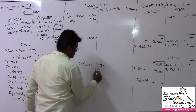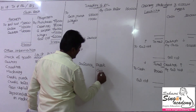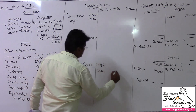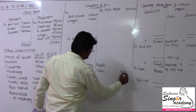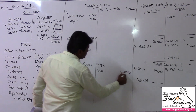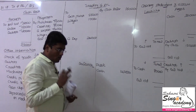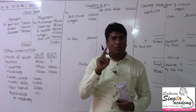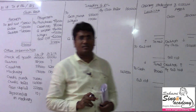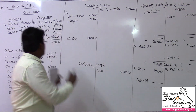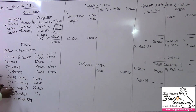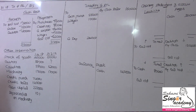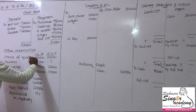The cash account closing balance is 1 lakh 42,000 rupees. This should be posted once in account format. Now there are adjustments — rent outstanding will be posted later. Stock of goods and other items need to be adjusted.